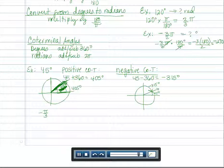For -π/3, to get the positive coterminal, you do -π/3 plus 2π. Ignore the π and just work with the numbers: basically do -1/3 plus 2, and you're going to get 5π/3.